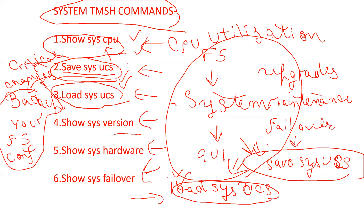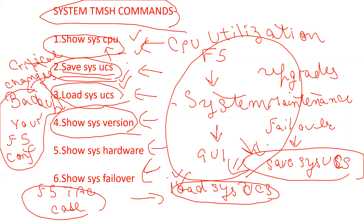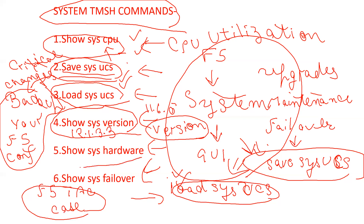Another command to check the latest version — whenever you are upgrading or whenever you open an F5 tech case, you need to check the version. Whenever you open a case, F5 tech support will ask you what version you are running. You can check versions like 11.6.0 or 12.1.3.3 with this command. Another important command to check serial number and hardware-related information is `show sys hardware`, which gives you hardware details including serial number.